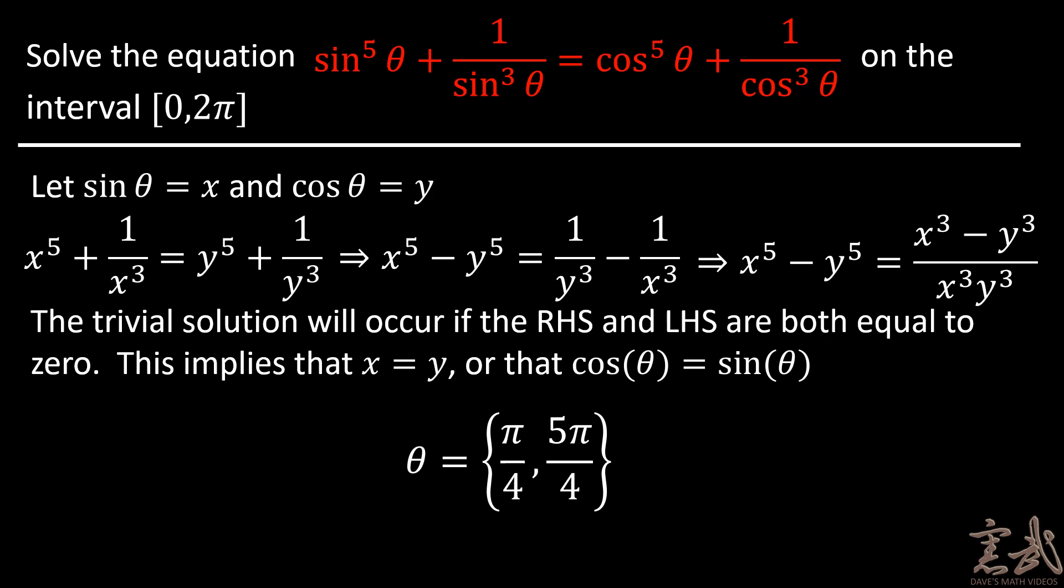It might seem like we're done now, but now we have to consider the non-trivial solution. So the non-trivial case involves doing a little bit of algebra. I have x to the fifth minus y to the fifth is equal to x cubed minus y cubed over x cubed y cubed.